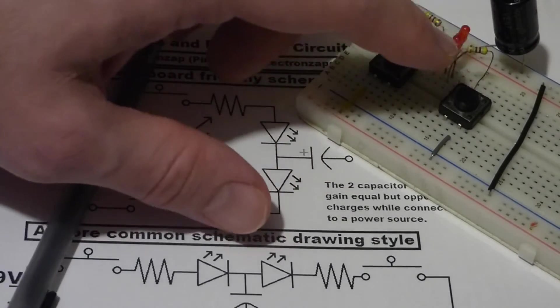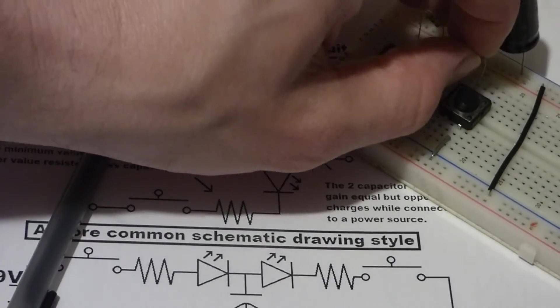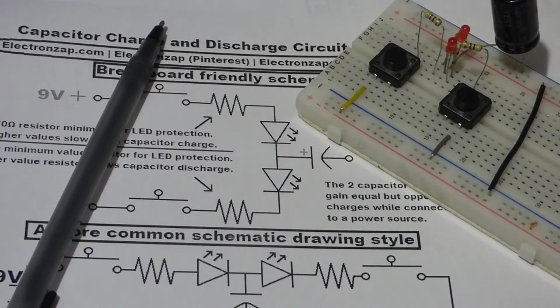So it does that, but it also slows down the charge and discharge. This one slows down the charge of the capacitor, and then this resistor slows down the discharge of the capacitor so that the LEDs stay lit longer. And we can make them stay lit longer by using even higher value resistors, but I think this is good for this demonstration circuit especially.